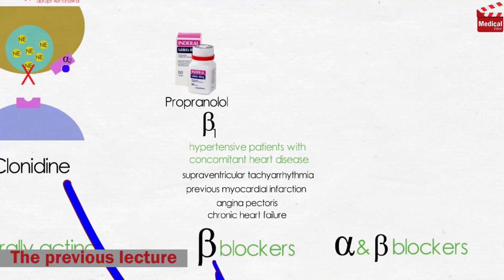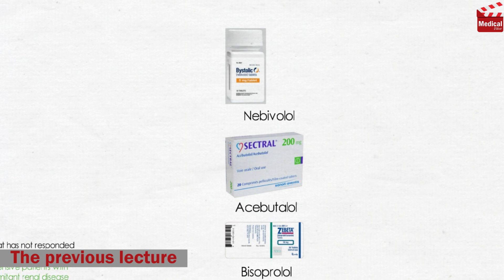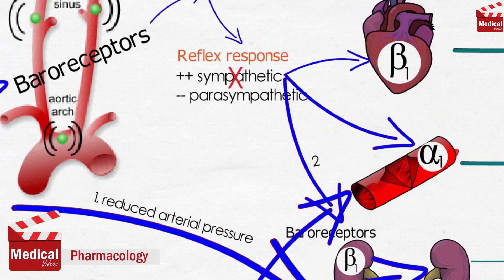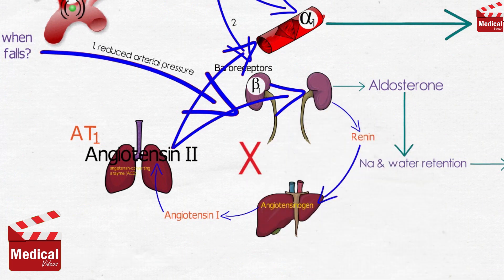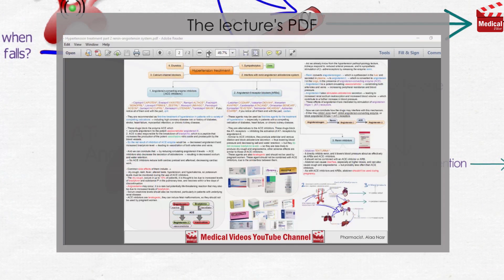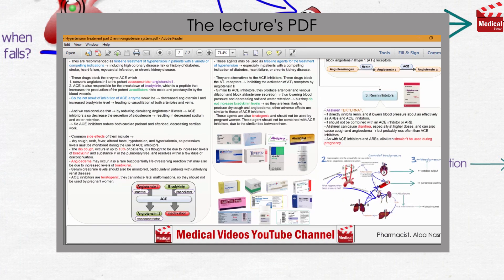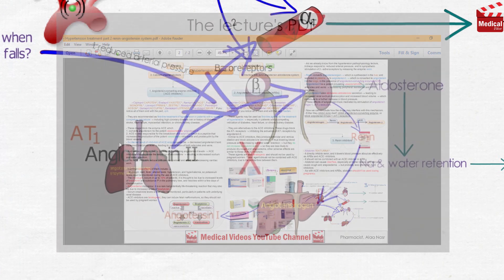In the previous lecture we started discussing hypertension treatment, specifically the sympatholytics. Today we'll discuss the second category: the agents that interfere with the renin-angiotensin system. You'll find the lecture's PDF down in the description, so without any further delay, let's start.